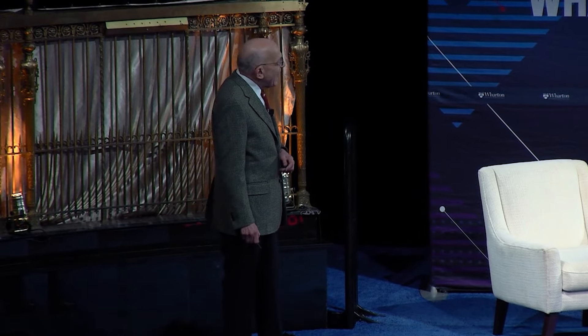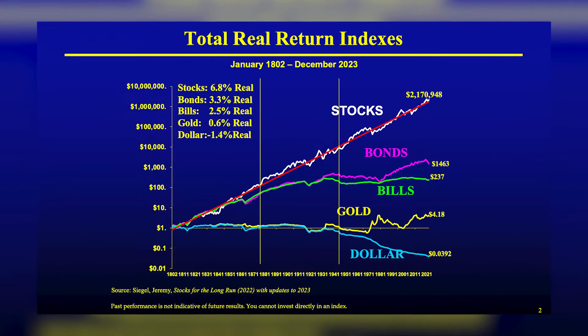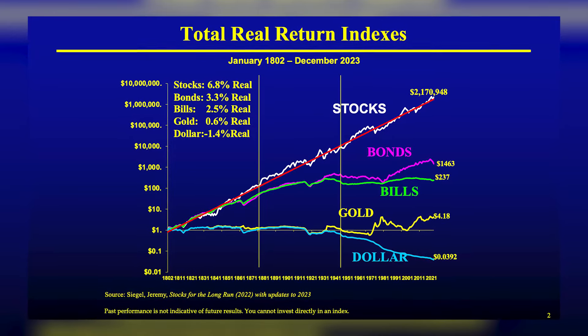Stocks, bonds, treasury bills, gold, and the dollar over 222 years — further back than any other researcher investigating historical returns on those asset classes. Take a look at that stock line and the compound annual rates of return. Over the last 221 years, the average annual after-inflation real rate of return on a diversified portfolio of common stock is 6.8% per year — more than double any other asset.